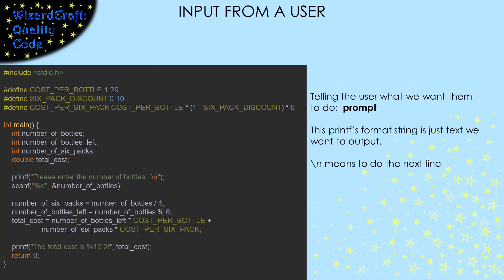Up to this point, we've just made number of bottles be eight. Let's try to get that information from our user. So when our program runs, we want it to tell the user to input the number of bottles, and then read in the number that the user gives us and store it into the number of bottles variable. We call the text that gives the user instructions a prompt, and we can just use the format string of printf to describe what we want. The backslash n tells it to go to the next line.